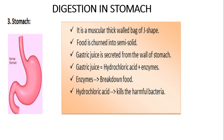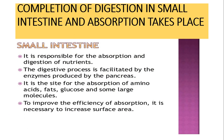Enzymes help in the breakdown of food - they help in the conversion of larger, complex food materials into simpler ones. What is the function of hydrochloric acid? The formula of hydrochloric acid is HCl. It will kill harmful bacteria present in the stomach. In the stomach it is an acidic medium because hydrochloric acid is present.